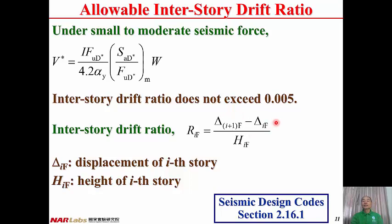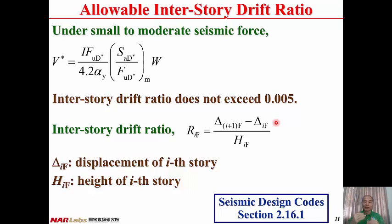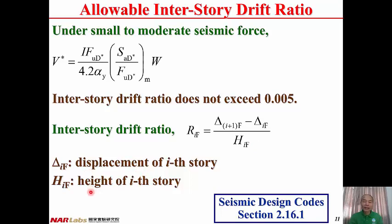This small to moderate seismic force applies to site class 1, 2, or 3, and also Taipei basin. The inter-story drift ratio RIF equals (delta(i+1)F minus delta(i)F) divided by HIF. The numerator is the relative displacement between two adjacent floors, divided by the height of the floor. Delta(i)F is the displacement of the i-th story, and HIF is the clear height of the i-th story.